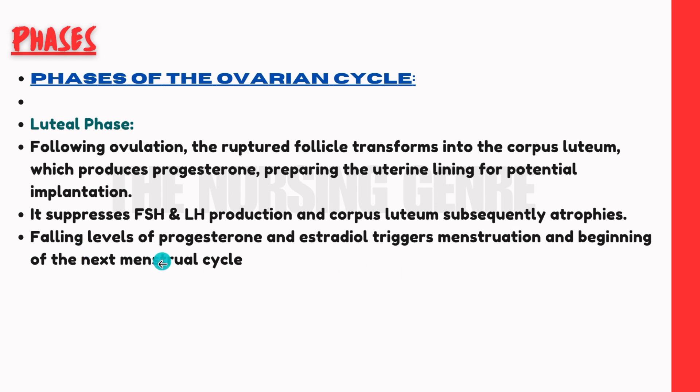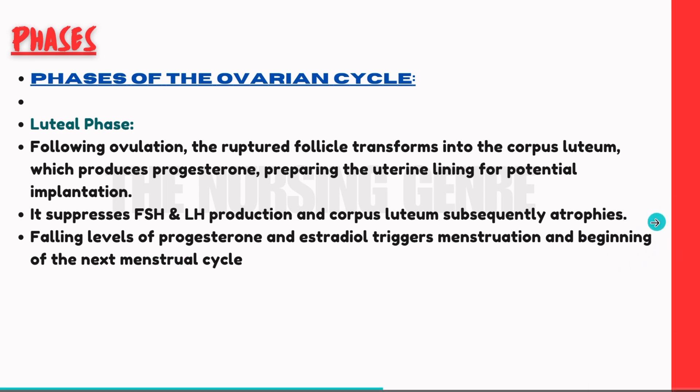Falling levels of progesterone and oestradiol trigger menstruation and the beginning of the next menstrual cycle. Progesterone hormone decreases, and this leads to the start of menstruation. This completes the ovarian cycle.